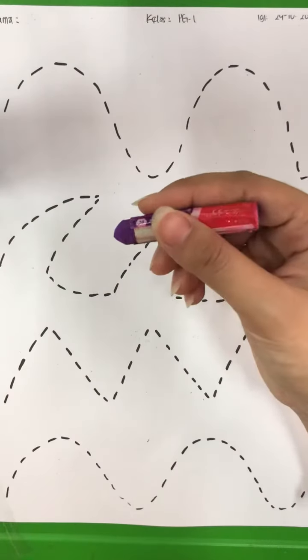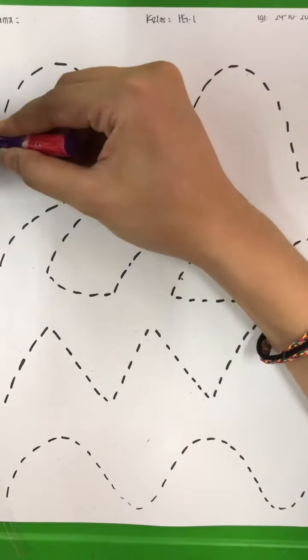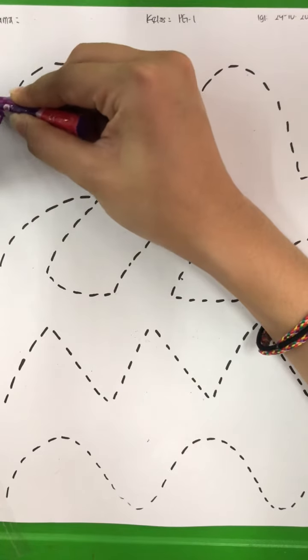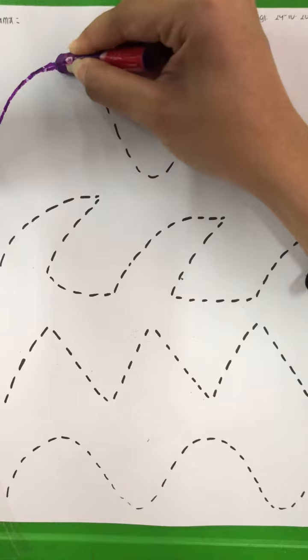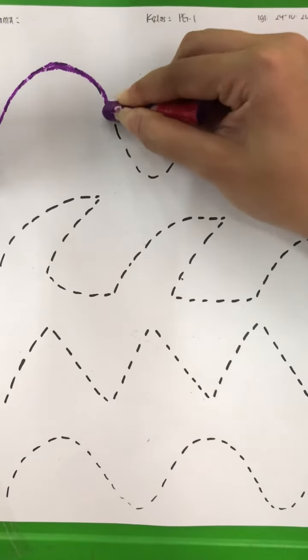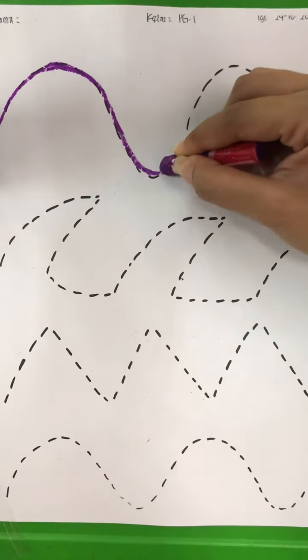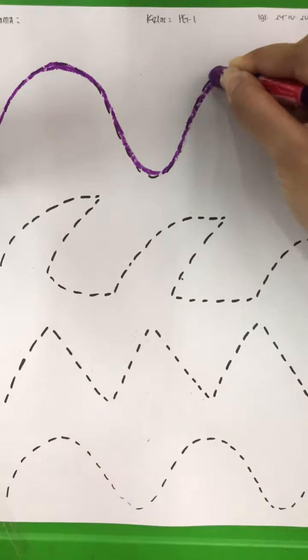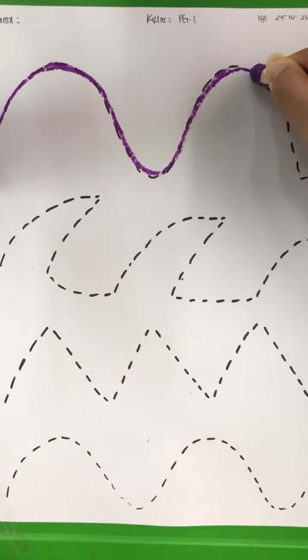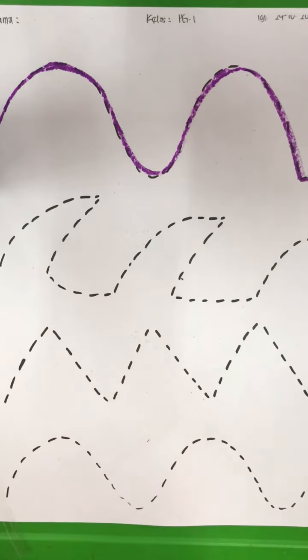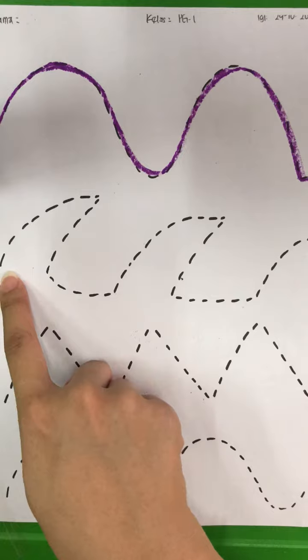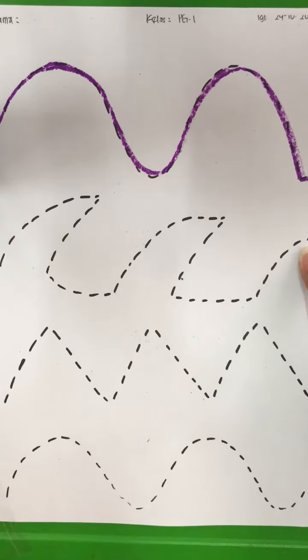Now we are going to start from this line, we go up following the lines and then go down and up again. After that you go down. Good, now the next one, starting from this point again until this point.